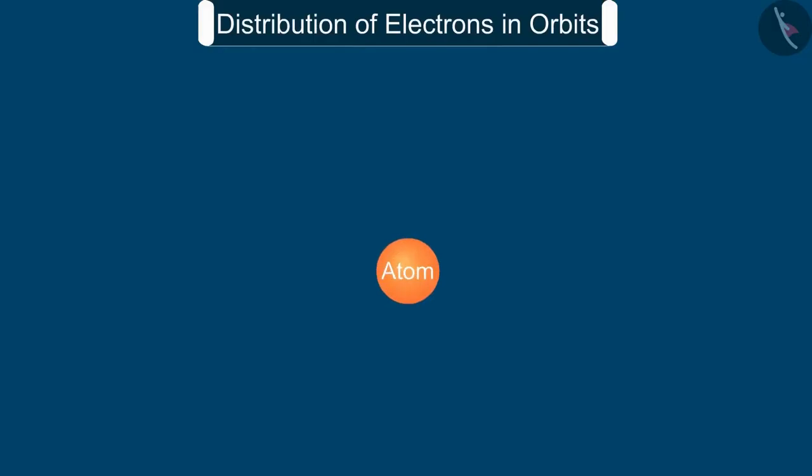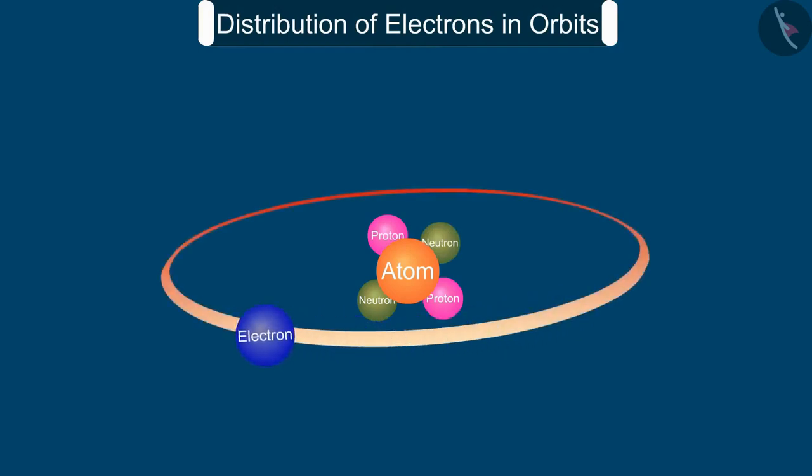In the previous video, we saw that the protons and neutrons in an atom exist in its nucleus and electrons revolve around the nucleus in well-defined orbits. Let us now see how electrons are distributed in different orbits of an atom.